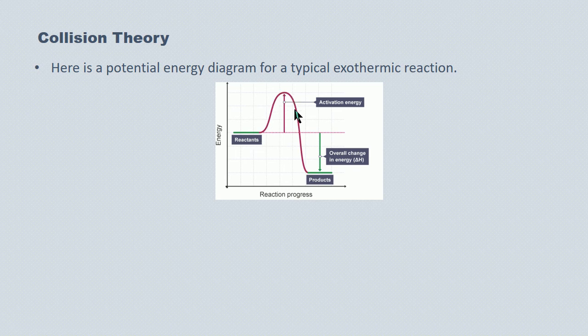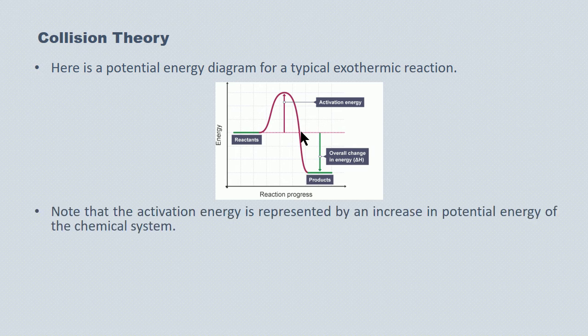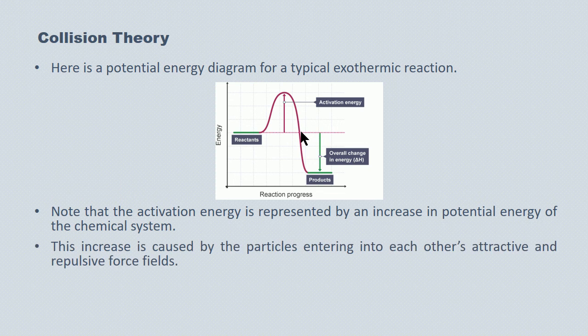This hump is the energy required by the collision to give rise to chemical change. The particles have to collide with the minimum energy — the activation energy — for the chemistry to proceed. Activation energy is represented by an increase in potential energy. As the particles approach one another, their protons and electrons begin to interact, entering each other's attractive and repulsive force fields. So potential energy increases as particles approach one another, which is why we see an increase in the potential energy curve here.